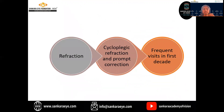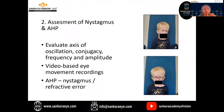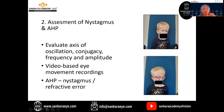For refraction, a cycloplegic refraction needs to be done, and proper correction of the refractive error is mandatory. Frequent visits are required in the first decade of life. For assessment of nystagmus and abnormal head posture, we have to evaluate the axis of oscillation, conjugacy, frequency, and amplitude. Video-based eye movement recordings can also be used. In this picture, you can see the child is reading with a head tilt and face turn, which gets corrected with glasses.